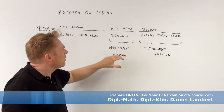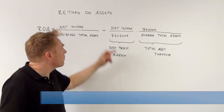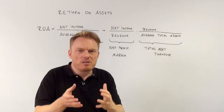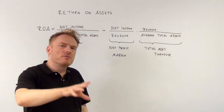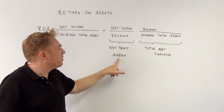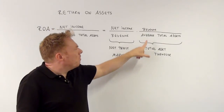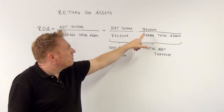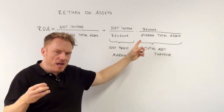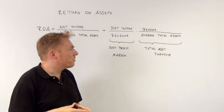So the first fraction can be called net profit margin, which makes sense: net income divided by revenue. If you look at what part of revenue is net income, then you have net profit margin. And net profit margin can be multiplied by total asset turnover, which is revenue divided by average total assets. So the percentage of average total assets generated by revenue is total asset turnover.